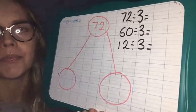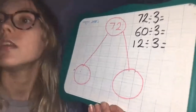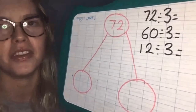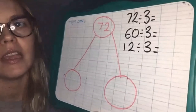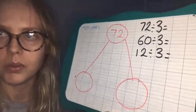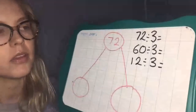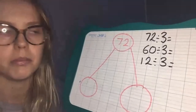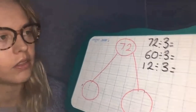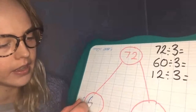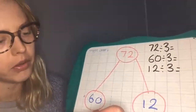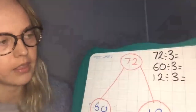What they did in one of the questions on the worksheet is they partitioned the number into multiples of what you are dividing by. So we've got the number 72, which is quite a large number, but we can partition it into 60 and 12, because both of those parts together add up to make 72.